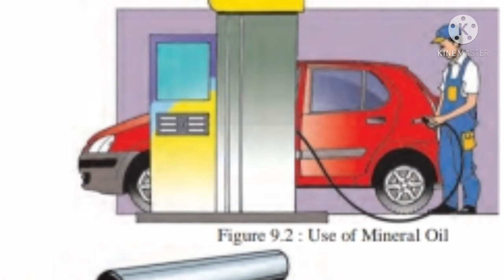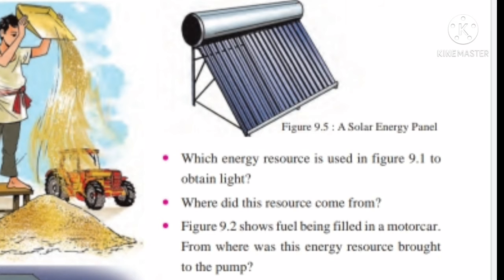The next figure we can see on the screen is 9.2 — a man is using mineral oil in his car as fuel so that the car can run. We all know that vehicles run with the help of petrol and diesel as their fuel. Figure 9.5 shows us a solar energy panel.